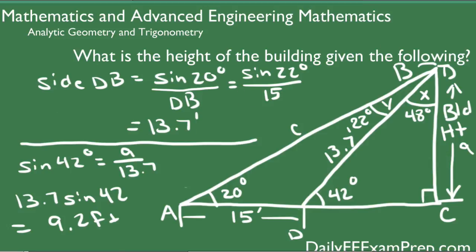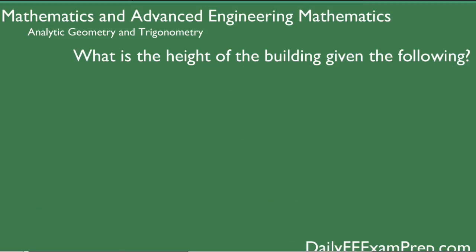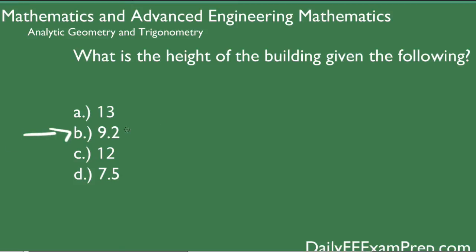Let's check back and see if we have that as one of our answers — and it looks like we do. Letter B is our answer: 9.2 feet. Hopefully if you were weak in the law of sines, that helped clear some questions up. Be sure to like this video if you enjoyed it and share it with any engineering friends who might find it helpful. Check out my website dailyfeexamprep.com for more downloadable materials. This has been Joel Irway — stay tuned for the next video, thanks for watching, take care.